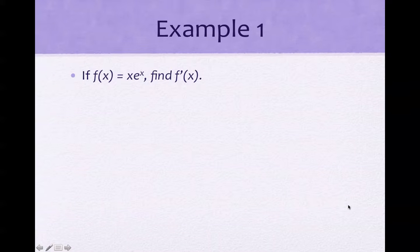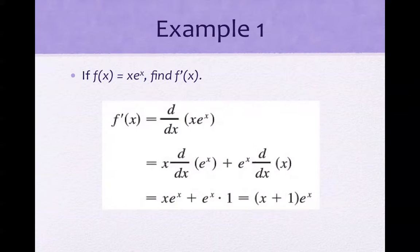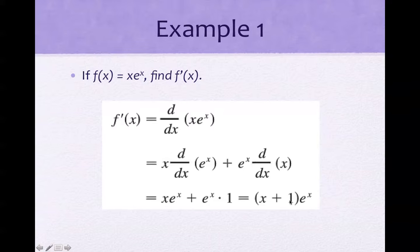Let's find an example — the derivative of f(x). We pull out x, giving us x times the derivative of e to the x, plus e to the x times the derivative of x. That gives us x·e^x plus e^x, and we can factor out e^x to get (x + 1)·e^x. The first function times the derivative of the second, plus the second times the derivative of the first.